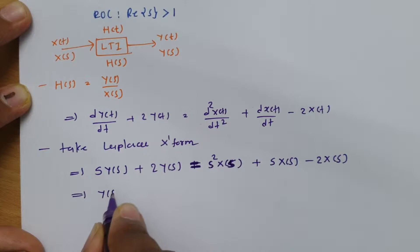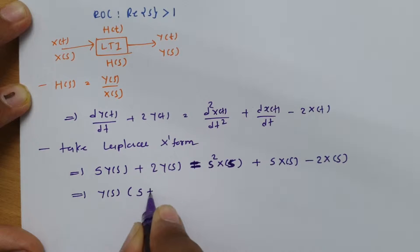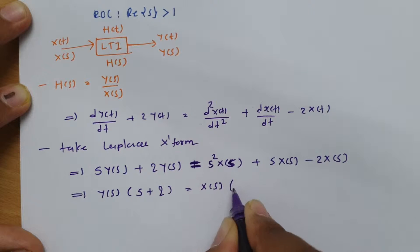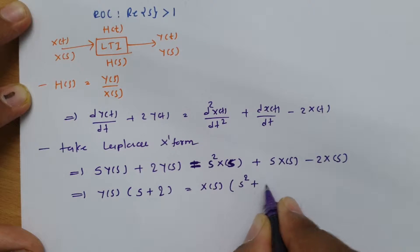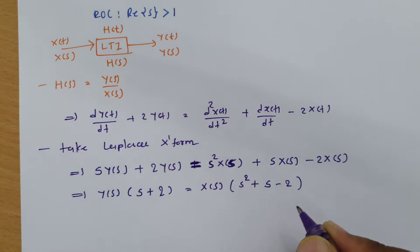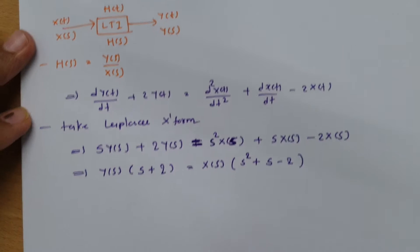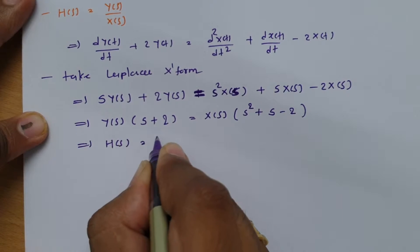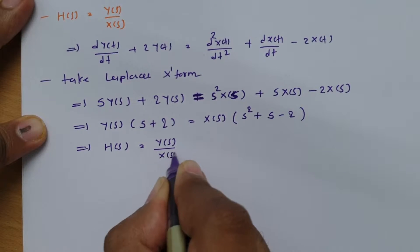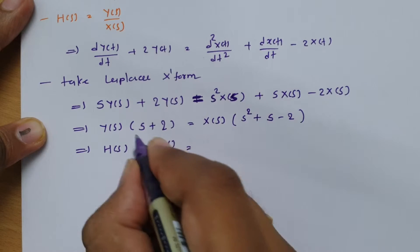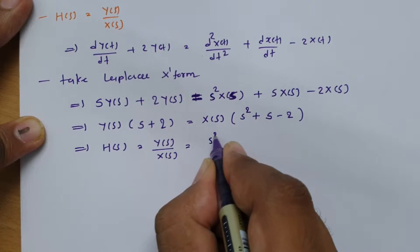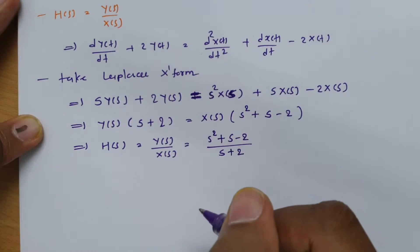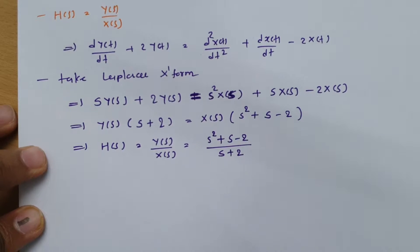Taking Y(s) common on the left gives (s + 2), and taking X(s) common on the right gives (s² + s − 2). So the transfer function H(s) = Y(s)/X(s) = (s² + s − 2) / (s + 2). This is our transfer function.